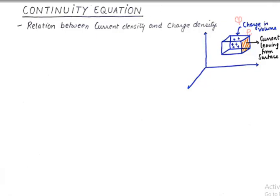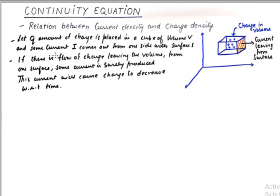For that, we need to write down this pre-phase for the condition. That let Q amount of charge is placed in the cube and the volume of the cube is V and some current I comes out from one side with the surface S. So the total volume of this entire cube is V and the surface area of this side of the cube only from where the current is coming out is S.